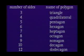Special names for polygons: A polygon with three sides is a triangle. A polygon with four sides is a quadrilateral. A polygon with five sides is a pentagon. A polygon with six sides is a hexagon. A polygon with seven sides is a heptagon. A polygon with eight sides is an octagon. A polygon with nine sides is a nonagon. A polygon with ten sides is a decagon. A polygon with twelve sides is a dodecagon.